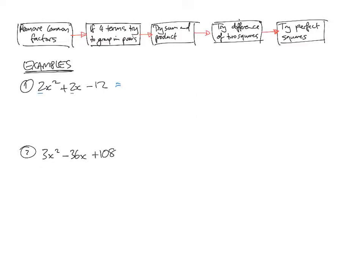Yes, two is a factor of all of these numbers. So if I remove two, from the first term, what would I need to times by two to get 2x squared? x squared. What would I need to times by two to get 2x? x. What would I need to times by two to get negative 12? Negative 6.